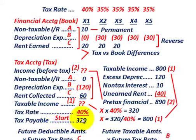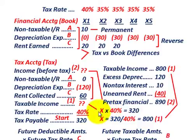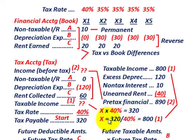Starting with our tax payable, it's going to be $320,000 — everything is shown in thousands of dollars. The tax rate for the first year is 40%, and then it changes for years X2 through X5 to 35%. Starting with the 40% tax rate and knowing our tax payable, we can determine taxable income: taxable income X times the 40% tax rate equals $320,000. So our taxable income equals $320,000 divided by 40%, which equals $800,000.